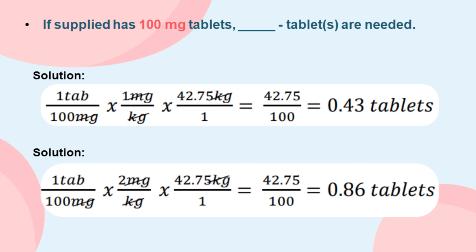Lastly, if supplied as 100-milligram tablets, how many tablets are needed? Since the dose is 1 to 2 milligrams per kilogram, we'll have two solutions. For the first, substitute the given into the formula, cancel out terms, multiply, and divide. The same goes for the second given: substitute, cancel out terms, multiply, and divide.